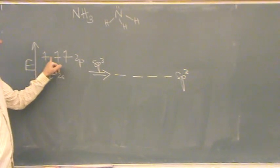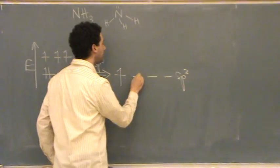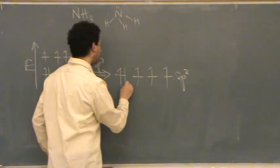There's two, three, four, five electrons. One, two, three, four, five.